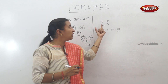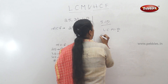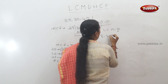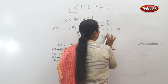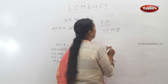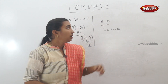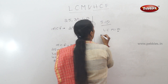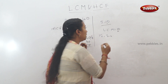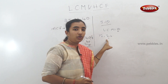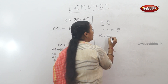The LCM of 5 and 10 is 10. Now another example: 12 and 24. In a single step, check — 12 is divisible into 24, as 2 times 12 is 24. So LCM is the highest number, which is 24.